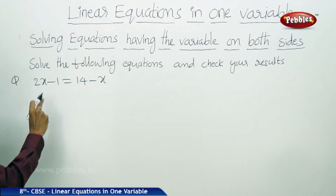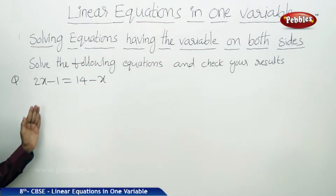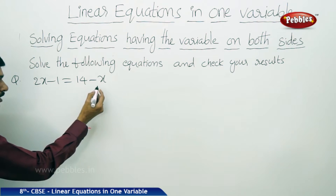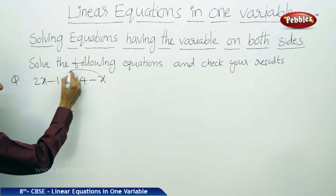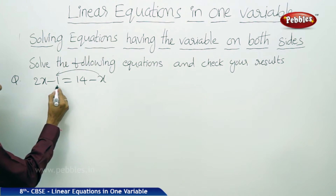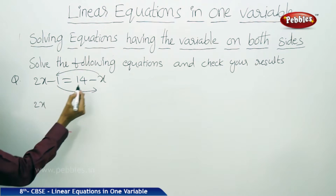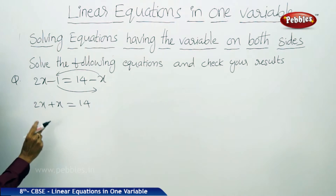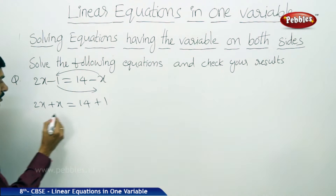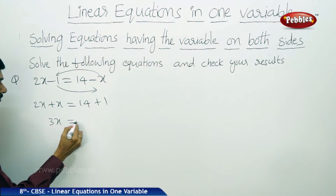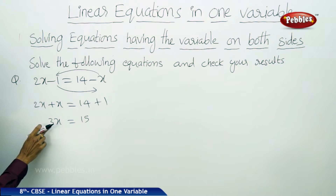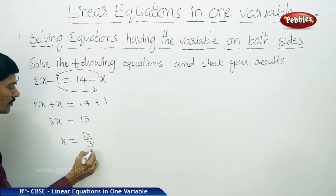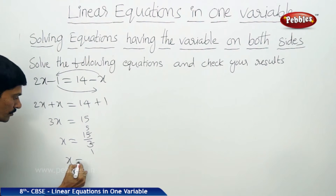The next linear equation is 2x minus 1 equals to 14 minus x. The LHS should contain only variables and RHS only constants. The variable minus x is in RHS — we send it to LHS. And minus 1 should be transposed to RHS. So 2x plus x equals to 14 plus 1, giving 3x equals 15. Dividing by 3, x equals to 5.